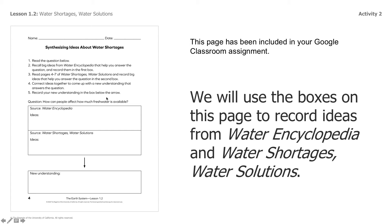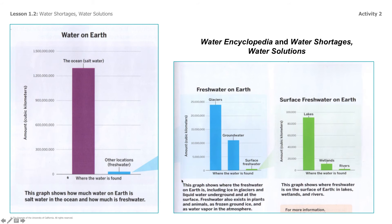So here we have a worksheet. You have a Google form that we've created for you — it looks slightly different but it's the same thing. You are going to be using these questions and recording some ideas from the books you're going to read: Water Encyclopedia and Water Shortages and Water Solutions. Make sure that you read those directions. Here are some graphs from those books — what are they trying to communicate? Take a second to examine them. Maybe pause the video if you need to and come up with some ideas.